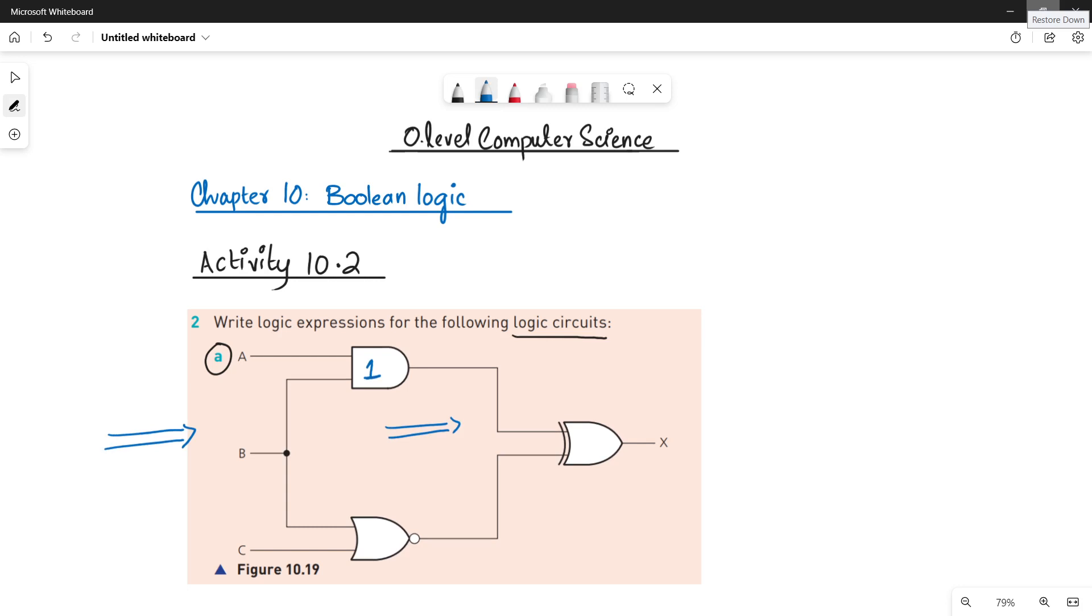This is logic gate number 1. This is logic gate number 2. Then move forward, this is logic gate number 3. So these are the three logic gates being used in this logic circuit.